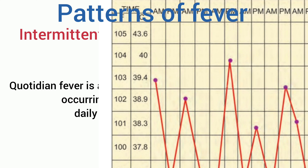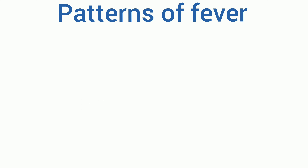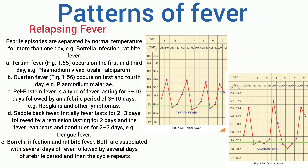Quotidian fever is a hectic fever occurring daily. Relapsing fever: febrile episodes are separated by normal temperature for more than one day, for example Borrelia infection and relapsing fever. This means the gap between two febrile episodes is more than one day.